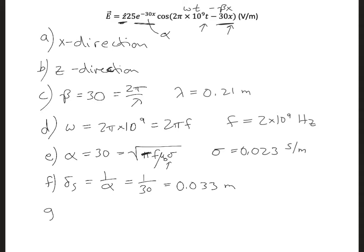And part G, what is the phase difference between E and H? Well, without even having to calculate anything, if we know it's a good conductor, we know that there's going to be 45 degrees out of phase. And we'll actually see that in the next part.